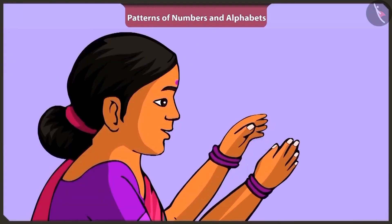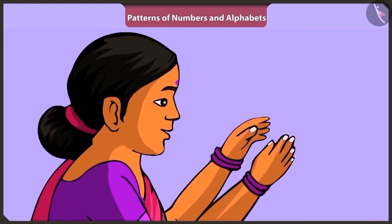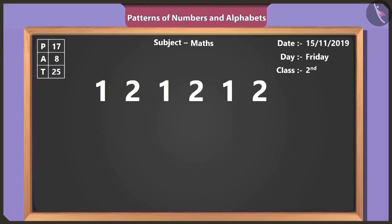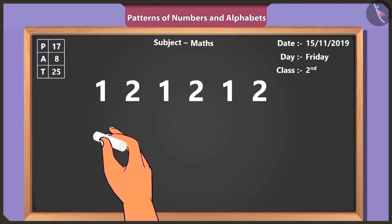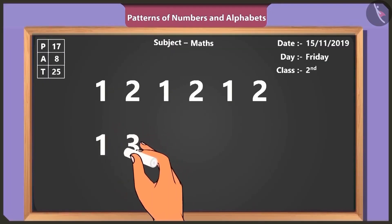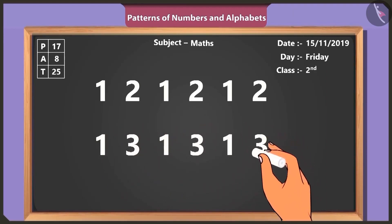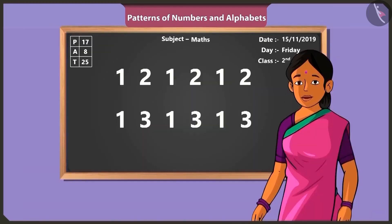Okay, ma'am. How many times did I clap? At first you clapped once, then three, then you continued: one, three, one, three. Well done, Vinny.